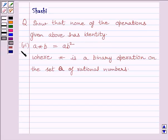Sixth part of the previous question is: a star b equals ab squared, where star is a binary operation on the set Q of rational numbers.